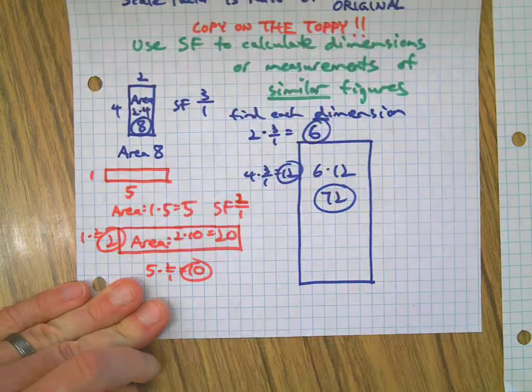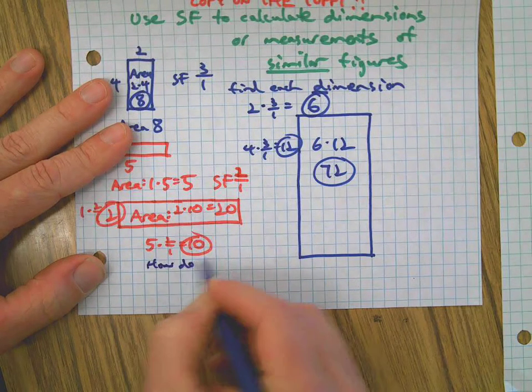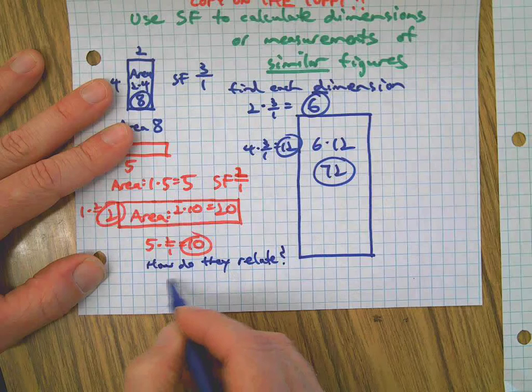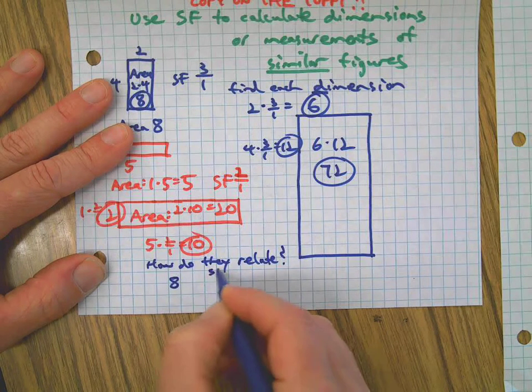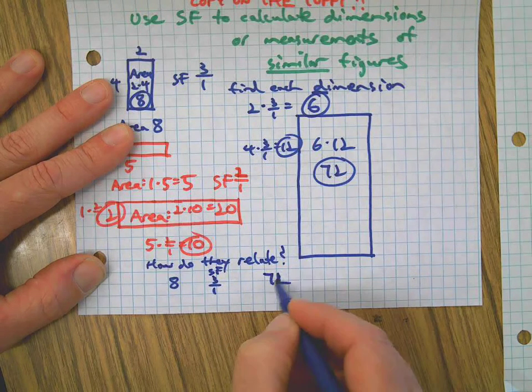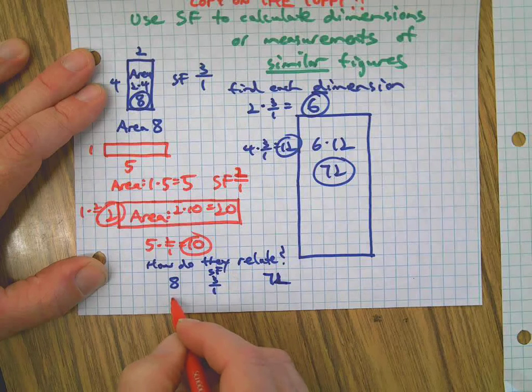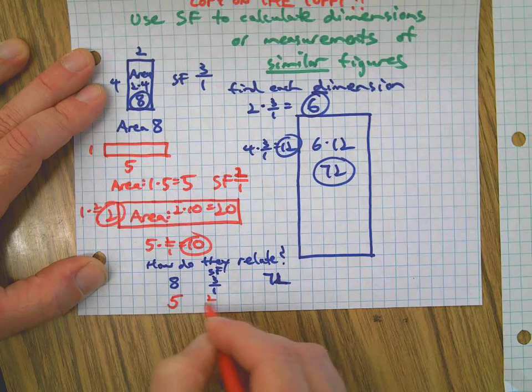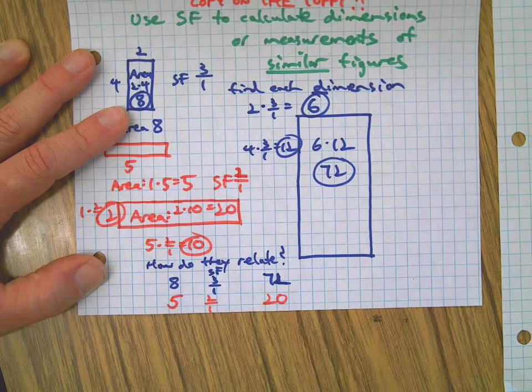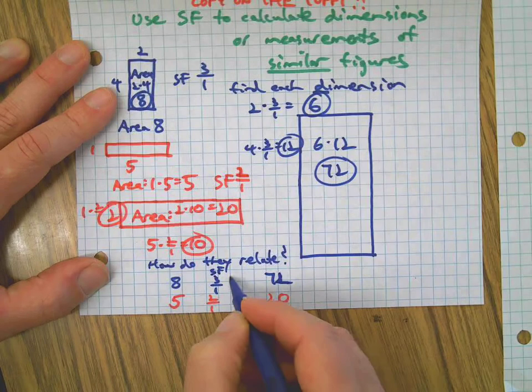Okay, so now we're going to analyze this a little bit. We're going to squeeze this in the bottom of the page. How do they relate? How did the area of the original and the copy relate? Let's see. We had eight, we had a scale factor of three over one, and we got a new area of 72. Interesting. Then on the red one we had an area of five, we had a scale factor of two over one, and we had a new area of 20. Interesting.